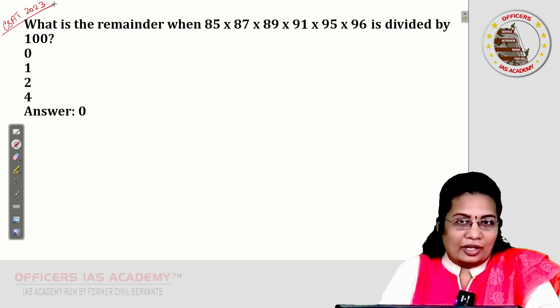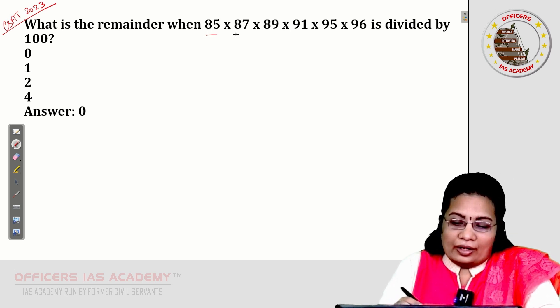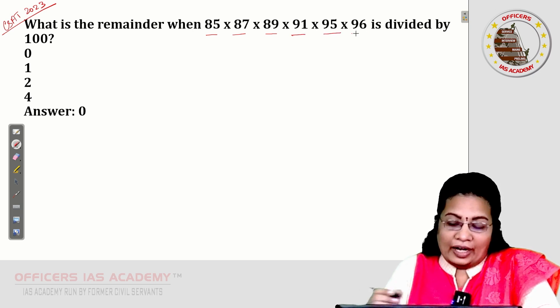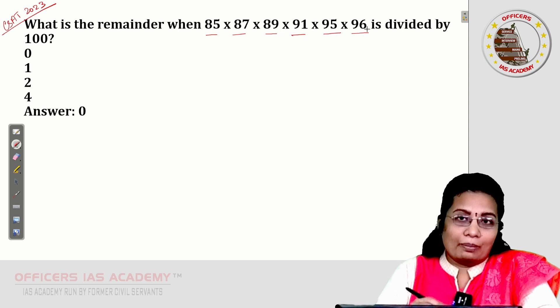So, what is the remainder when the product of 85, 87, 89, 91, 95, and 96 is divided by 100?